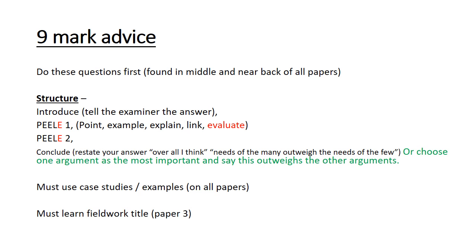Your structure is always the same for nine markers: first, introduce your answer — tell the examiner clearly what your answer to the question is. After that, write two PEELs: Point, Example, Explain, Link, and Evaluate. The example and explain can go in either order, whichever is easiest for you to write. The evaluate element is absolutely crucial on all nine markers — you must consider any positives or negatives of the points you are making.